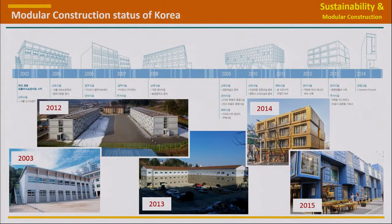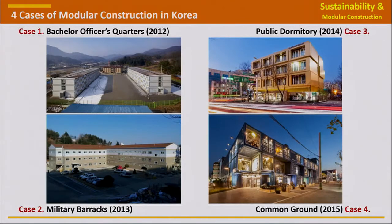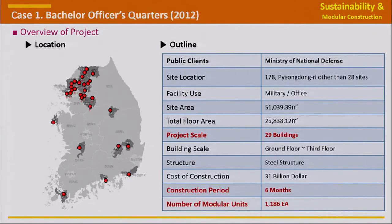Looking closely at modular construction in Korea: beginning with elementary school expansion in 2003, in 2012 the Ministry of National Defense virtual accommodation project, in 2015 commercial facilities were constructed. I participated from 2012 to 2016. I will explain the modular construction method in detail through four cases. The first project is virtual officer's quarters — a military building with 29 buildings constructed across 29 sites in six months. 1,186 modular units were manufactured and installed in just six months.